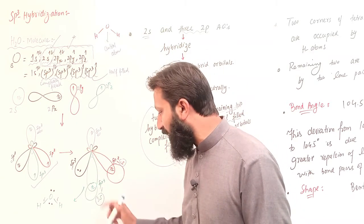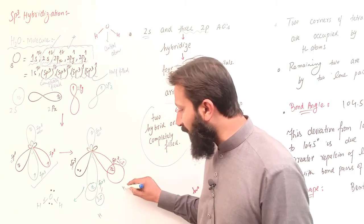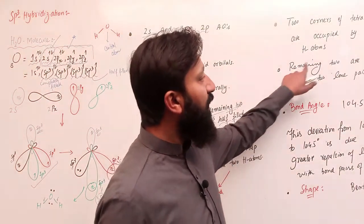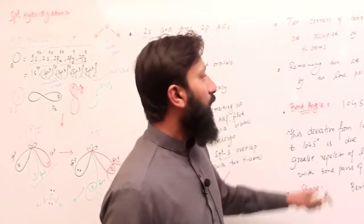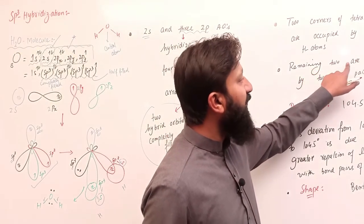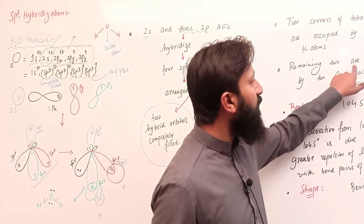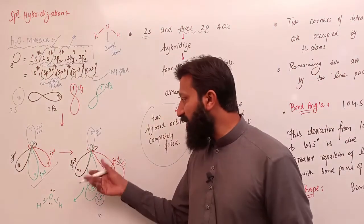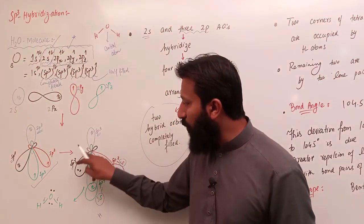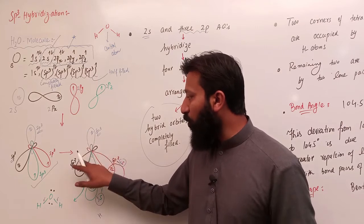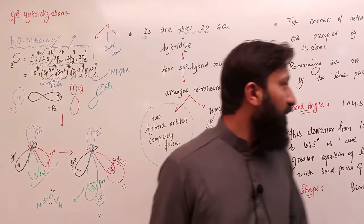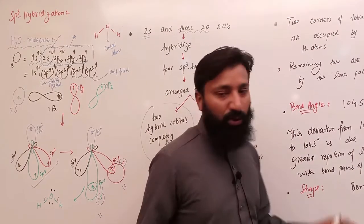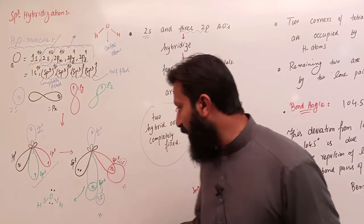Two corners of the tetrahedron are occupied by two hydrogen atoms, giving a tetrahedral structure. The remaining two corners of the tetrahedron are occupied by the two lone pairs. Thus we have a tetrahedral arrangement of electron pairs, and now we have to talk about the bond angle of this water molecule।